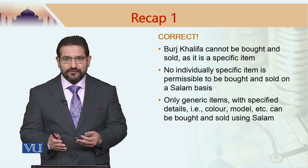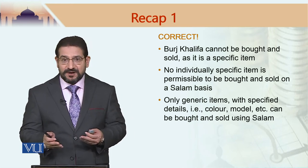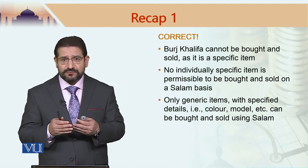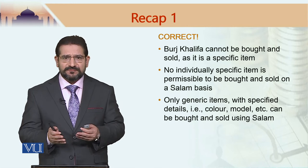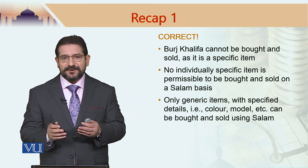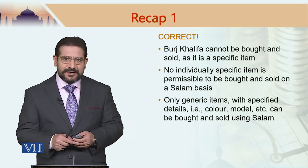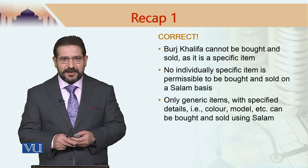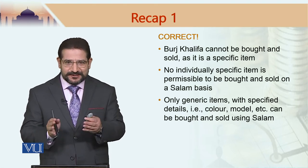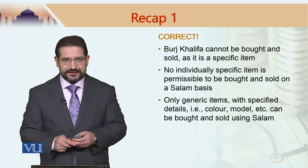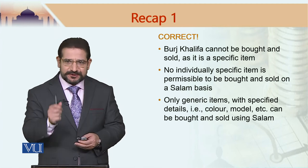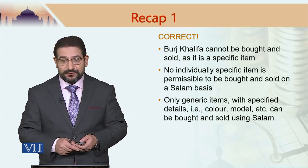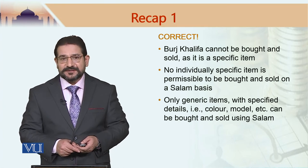We can sell generic items with specific details. For example, I can sell an iPhone 12 Pro Max, color silver, with other specifications to anyone on a salam basis, because there would be many iPhones of that specification available in the market. Burj Khalifa cannot be bought and sold on a salam basis because of the injunction in one of the ahadith that any produce of a specific field cannot be bought and sold on a salam basis. Similarly, anything which is specific — like 'this phone' — cannot be bought and sold on a salam basis.